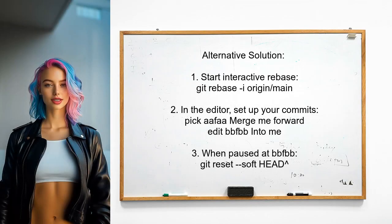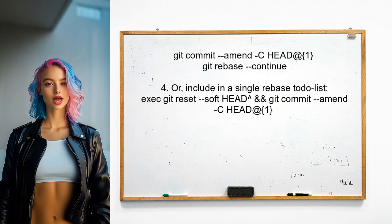Another alternative is to use a reset combined with a commit command. First, initiate an interactive rebase with your target branch. When the editor opens, pick the commits you want to keep. When the rebase pauses at a specific commit, use a soft reset to move the changes to the staging area, then amend the commit with the previous commit's message and continue the rebase.